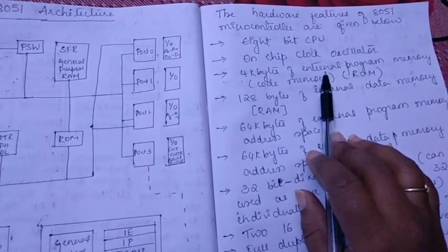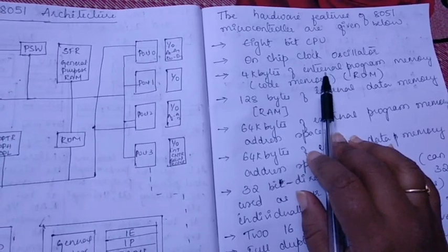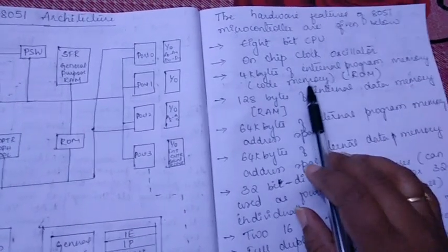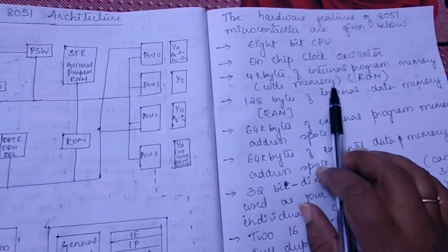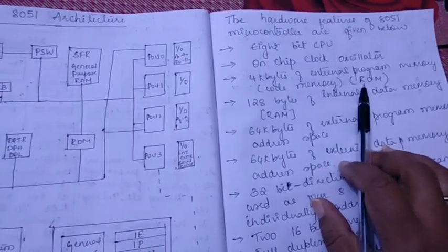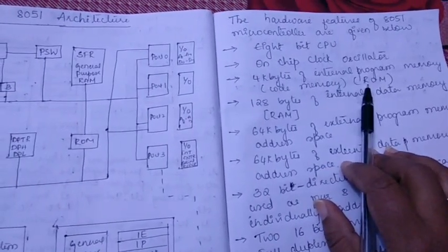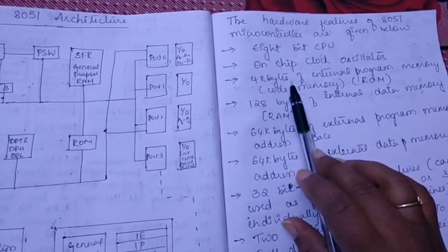Next, 4 kilobytes of internal program memory is there. That means it is a space where code memory is stored or you can simply call it as ROM internal ROM. It is 4 kilobytes.